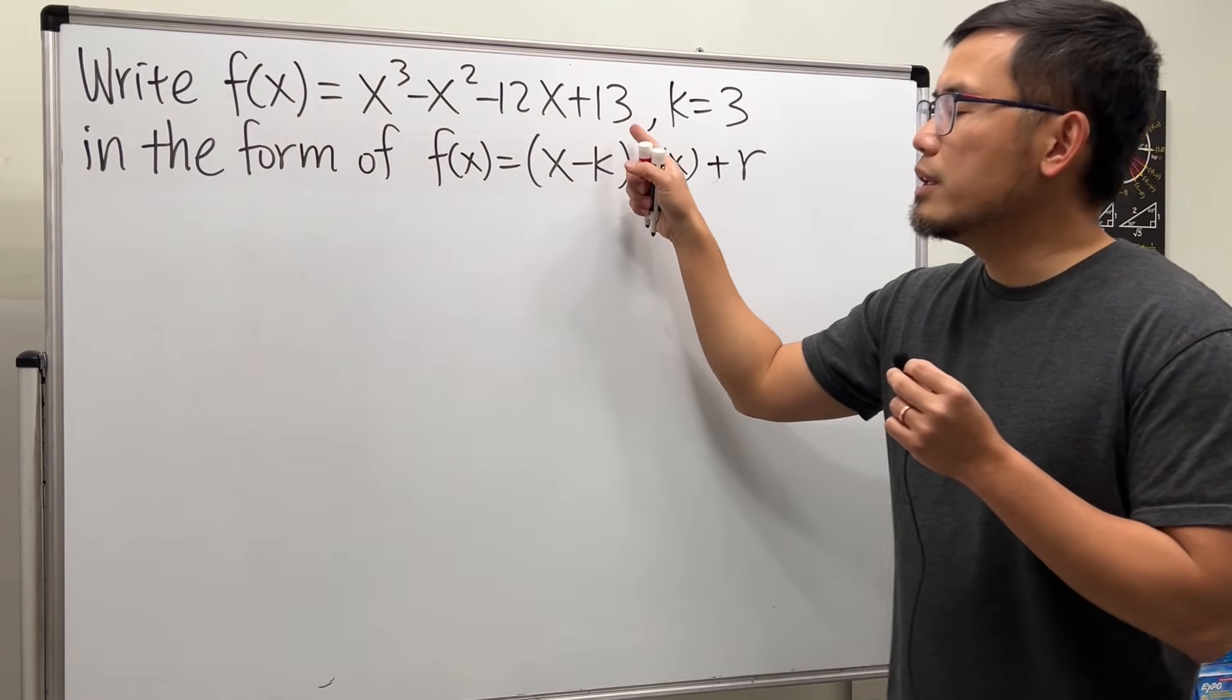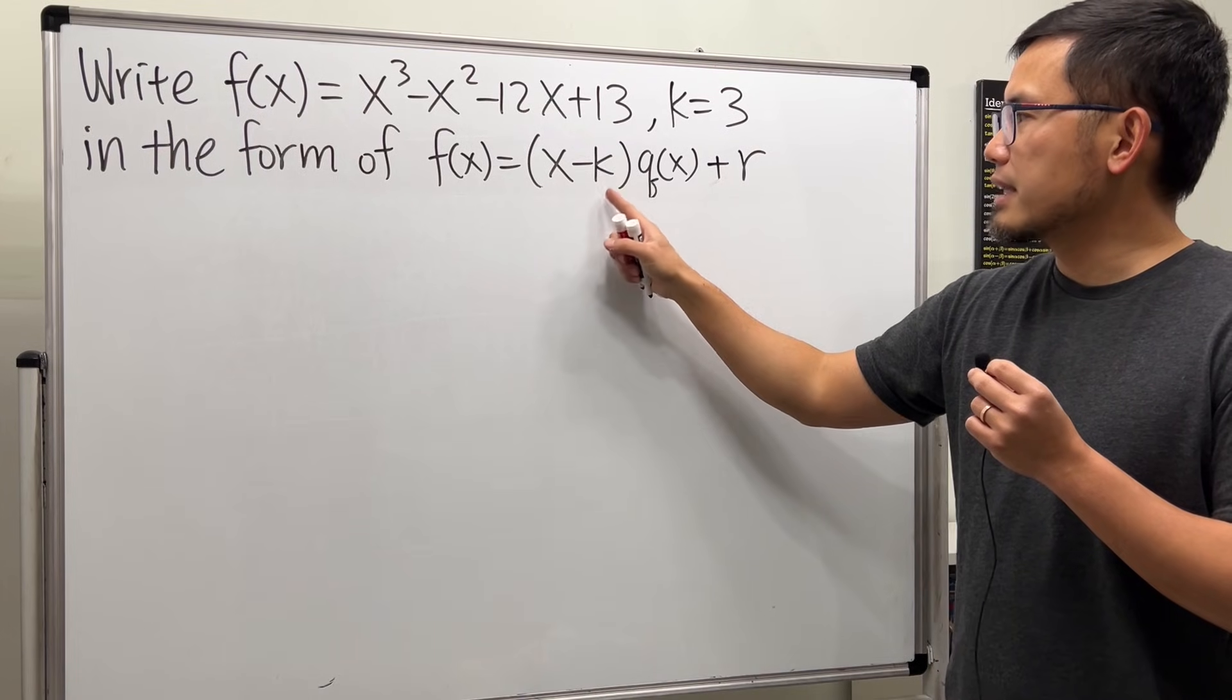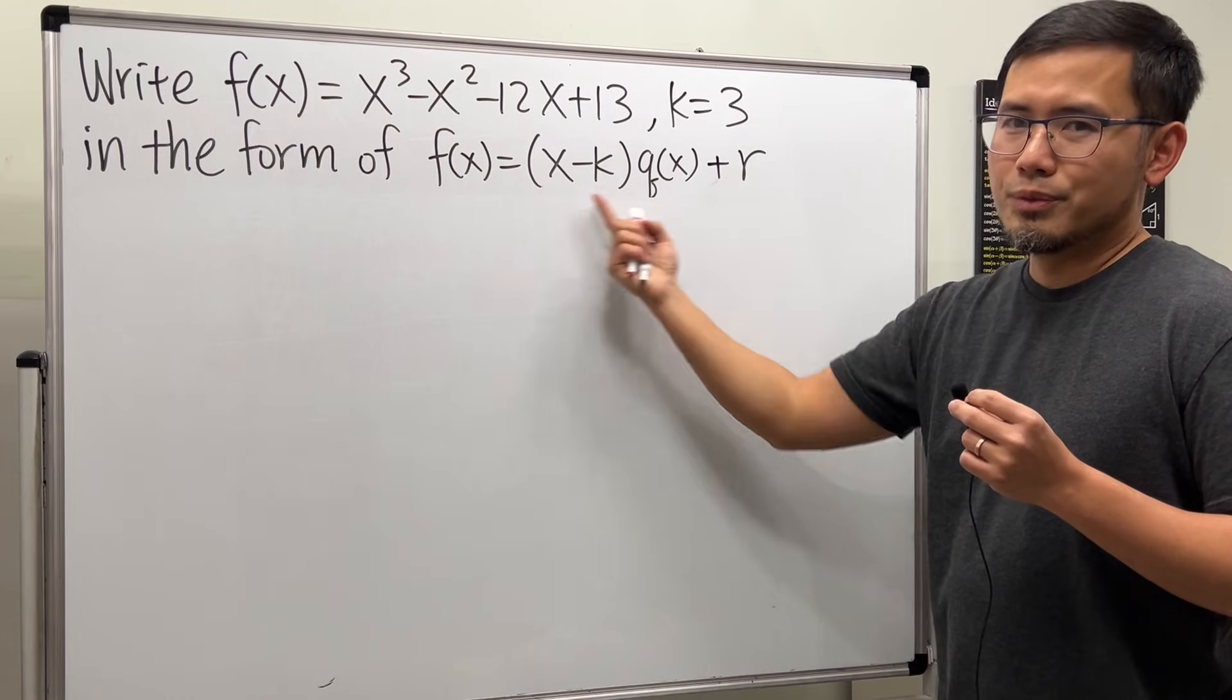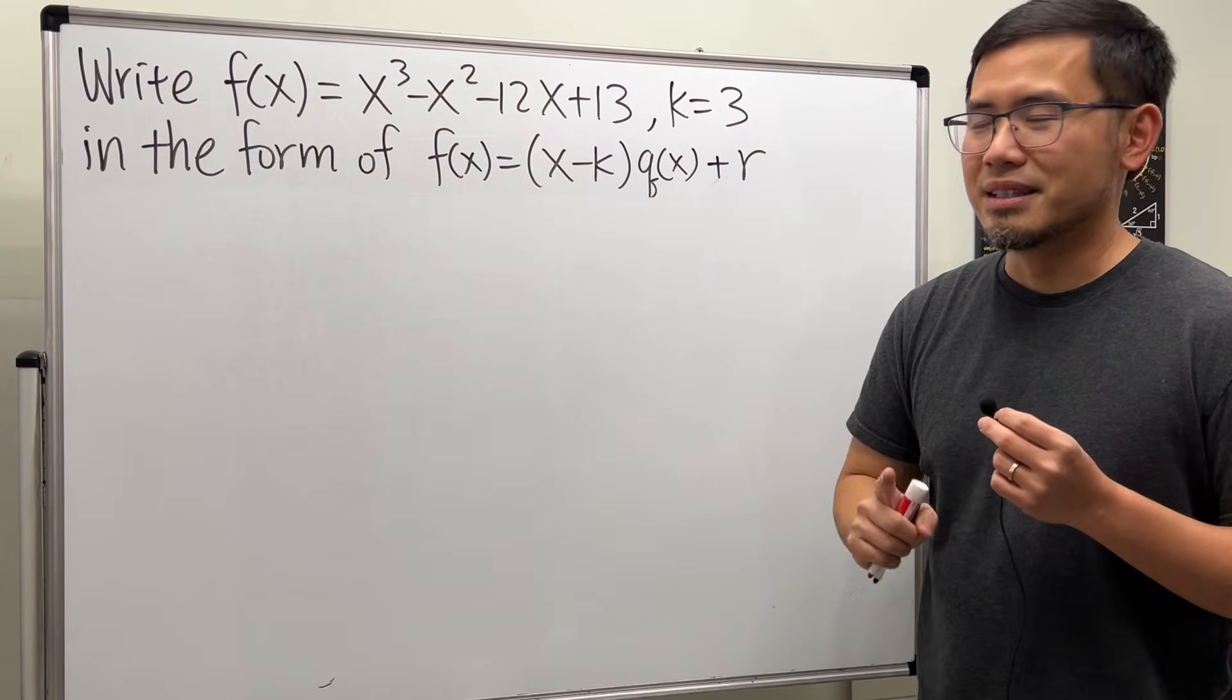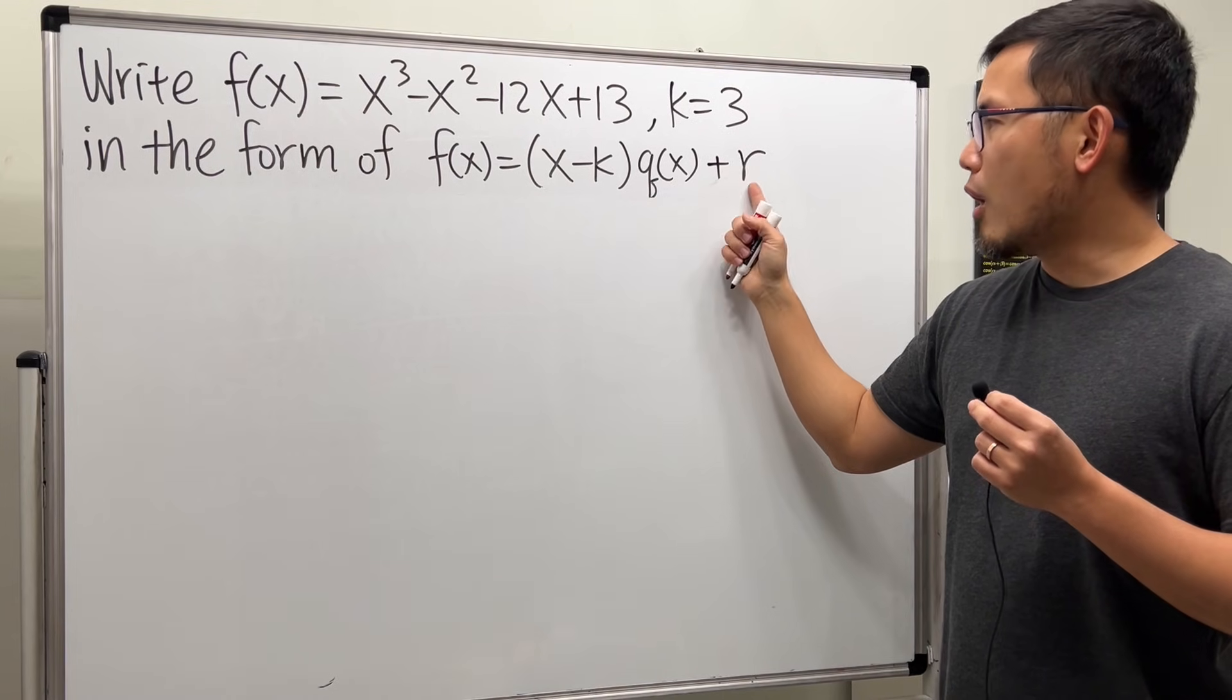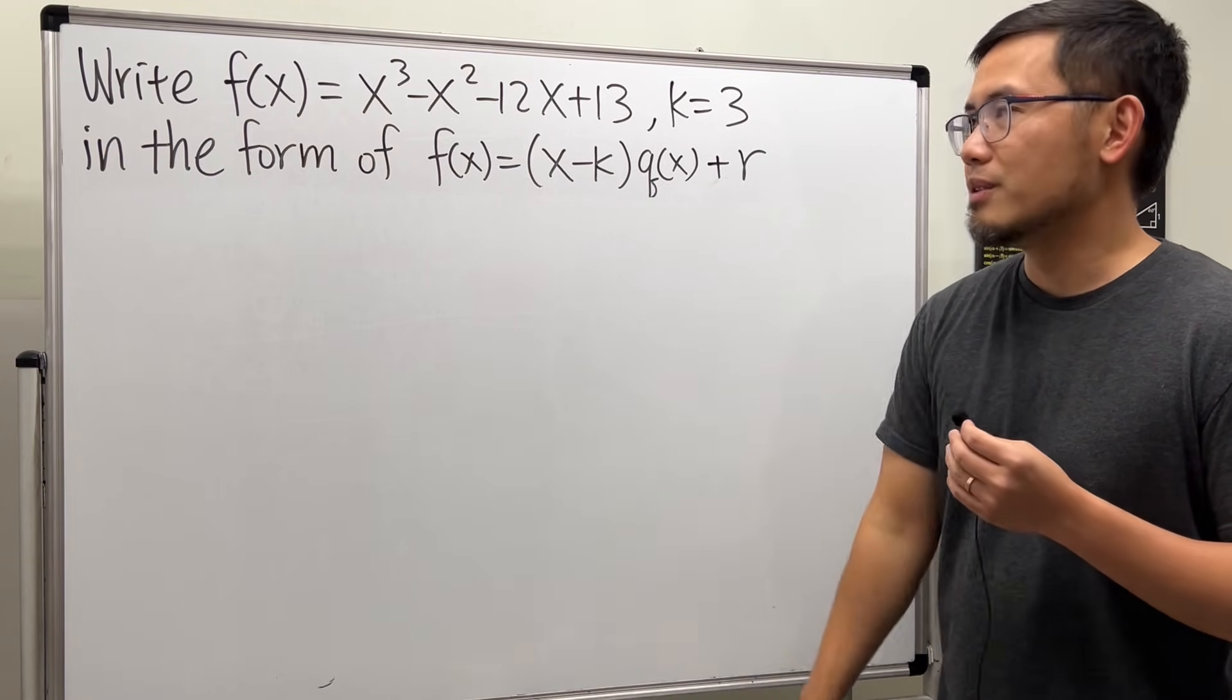First, we are given this function, and we are going to write this in the form of f of x is equal to x minus k times q of x plus r. I know why this is hard because, well, what's this, right? Here's the key. q of x stands for quotient, and r stands for remainder. So you are going to expect to do some division with polynomials.